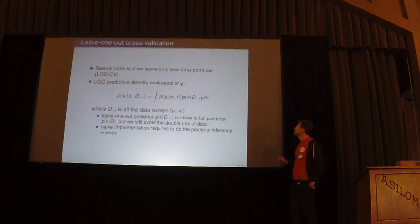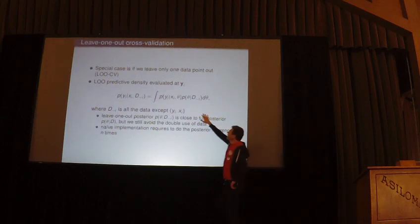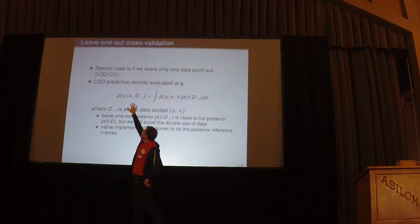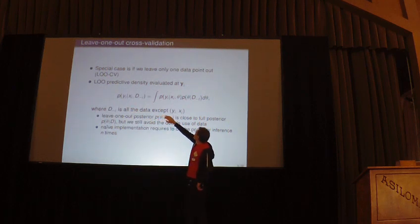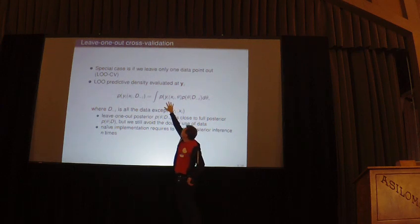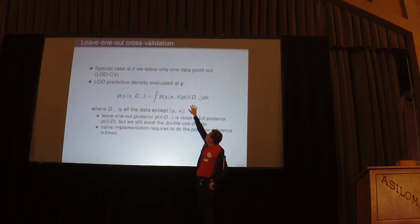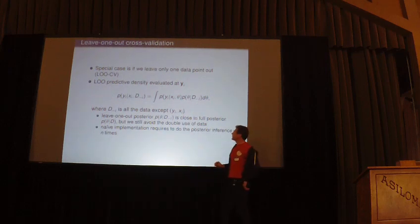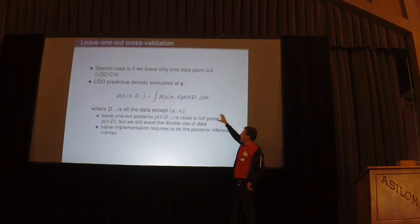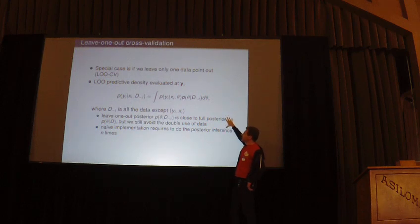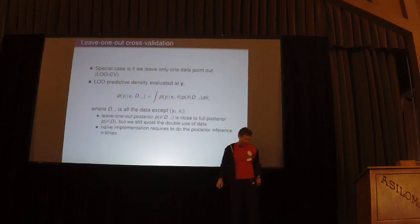When we do leave-one-out, we can factor the leave-one-out predictive distribution: here we have the prediction given theta, and separately the theta posterior given the leave-one-out data. The leave-one-out posterior is close to the full posterior, and we can take advantage of that by using importance sampling.